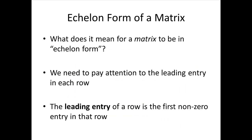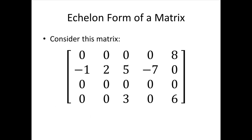So what does that have to do with a matrix? What does it mean for a matrix to be in echelon form? For this we need to pay attention to the leading entry in each row. The leading entry of a row is the first non-zero entry in that row. Let's look at an example matrix and find the leading entries.